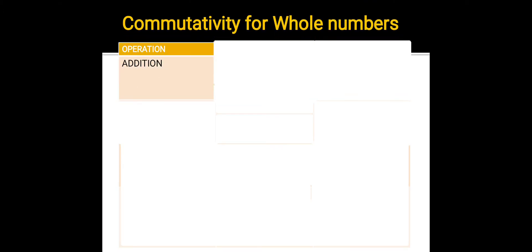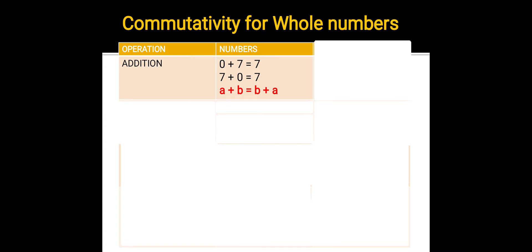Let's check for addition. 0 plus 7 equals 7. Let's change the order of these two whole numbers and see whether we get the same answer or not. 7 plus 0 also equals 7. So the order of the numbers does not matter. For any two whole numbers a and b, we can say a plus b equals b plus a. Therefore, addition is commutative.